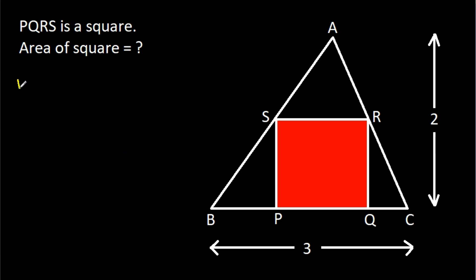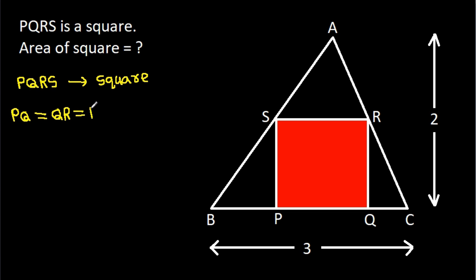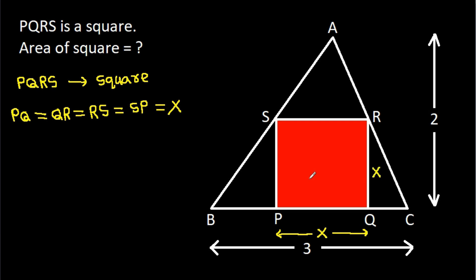Since PQRS is a square, PQ will be equal to QR, equal to RS, equal to SP. Suppose each side is X, so PQ is X, QR is X, RS is X, and SP is X.